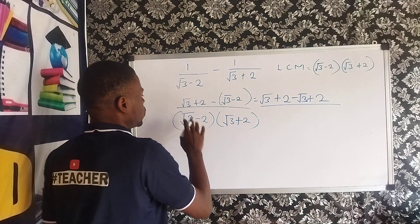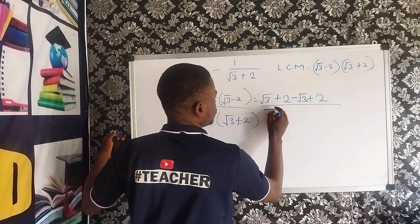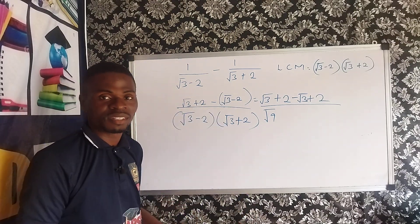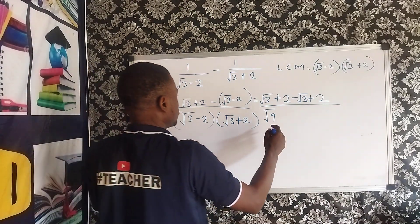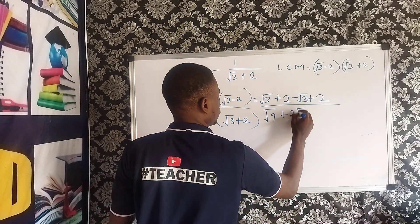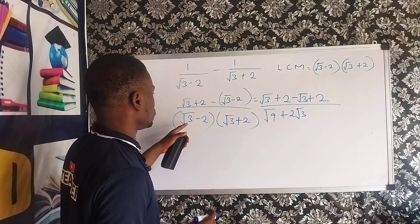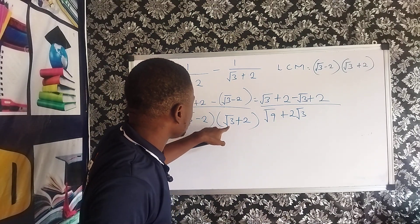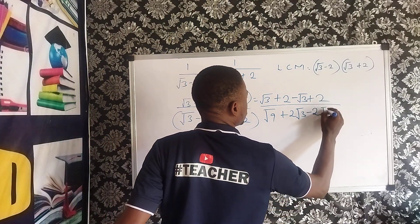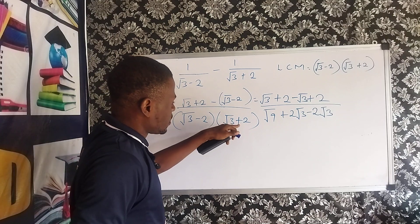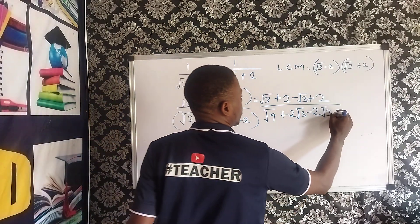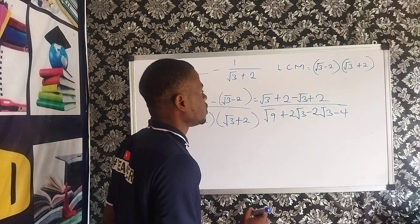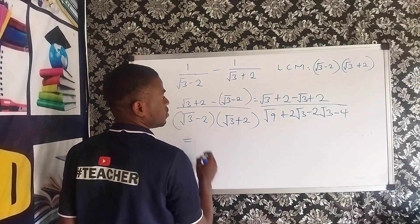Now, take note. Root 3 times root 3 gives us root 9. Now, the first bracket — we apply the second — the numbers in the first bracket, we multiply the numbers in the second bracket. Then, root 3 times 2 gives us 2 root 3. Then, minus 2 times root 3 gives us minus 2 root 3. Then, minus 2 times plus 2 gives us minus 4, because minus times minus is plus. Then, 2 times 2 is 4.